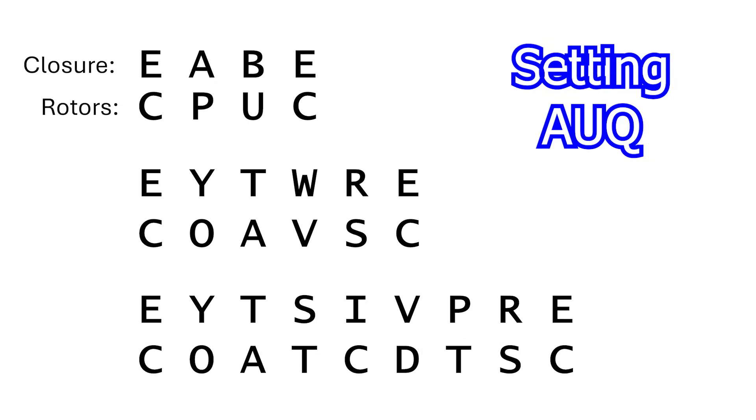For this setting, A, U, Q and C, while the three rotor closures start and end with the same letter, its inferred plugboard mappings are inconsistent.